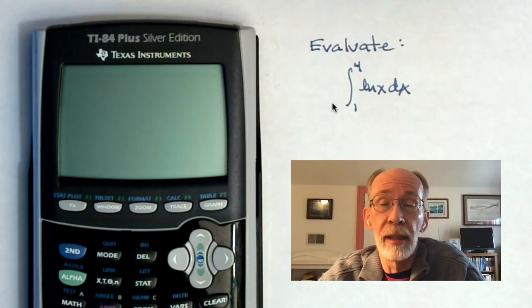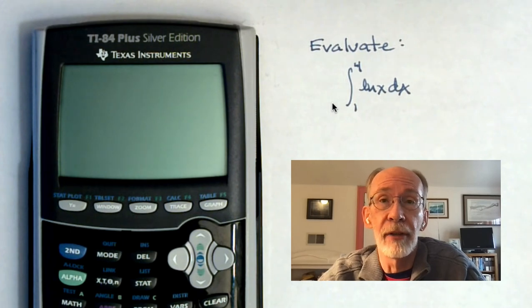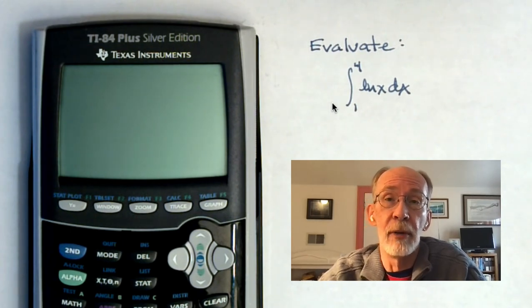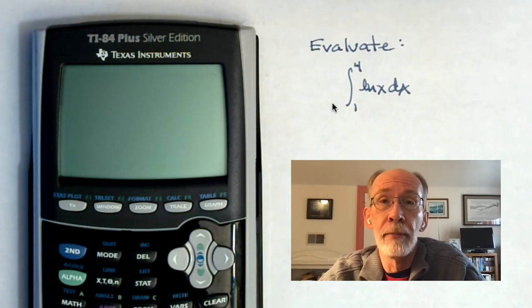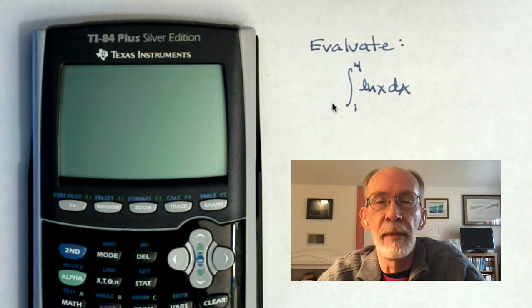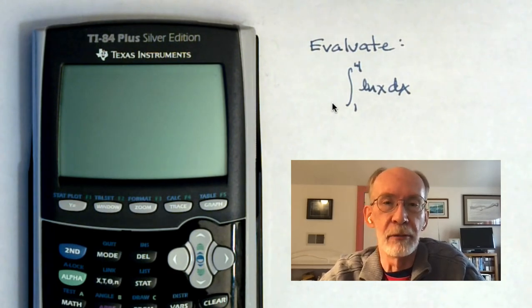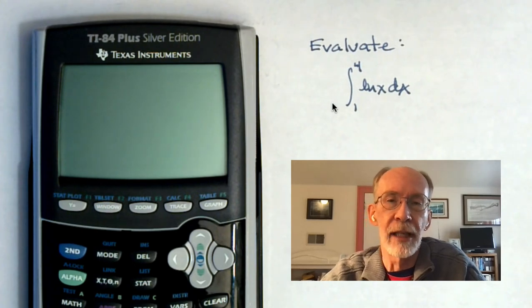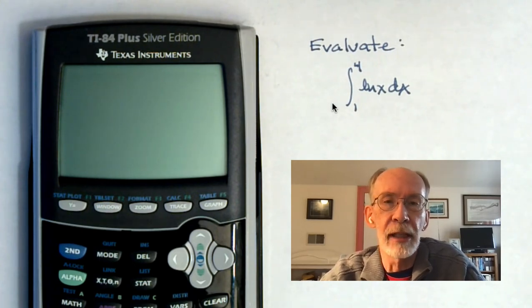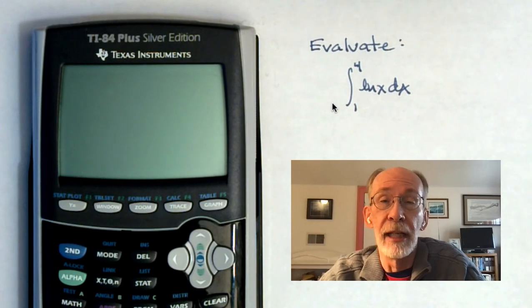You may know that there is a built-in fnInt command that will give good approximations to definite integrals on the calculator, and I'll put a link in the description to a video on how that works. But you may be asked to make a specific Riemann estimate using left endpoints and 20 sub-intervals or right endpoints and 10 sub-intervals or something like that. And for that purpose, your calculator doesn't have a built-in way of approaching it.